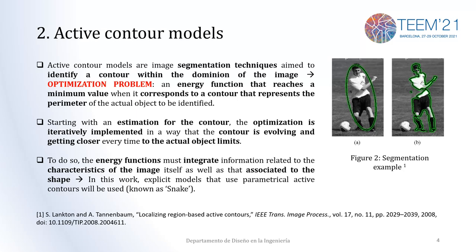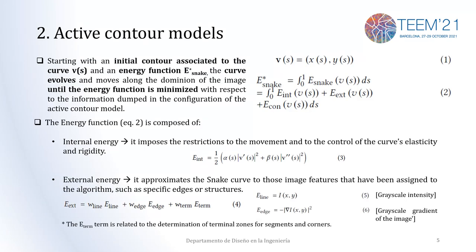Starting, as can be seen in figure 2a, from an initial contour, the algorithm will iterate until it reaches the contour and gets the minimum for the function. This energy function must integrate several pieces of information related to the characteristics of the image as well as to the shapes. We are going to use the snake model, which is a parametrical model. We will start, as seen in equation 1, with an initial contour depending on the space domain.